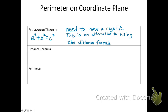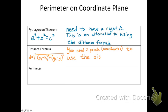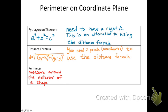The distance formula looks like this: d equals the square root of (x₂ - x₁)² + (y₂ - y₁)². You need two points or coordinates to use the distance formula. Personally, the Pythagorean theorem is quicker, easier, and has less chance of making a mistake. The perimeter is the measure around the exterior of a shape.